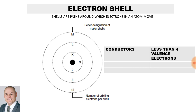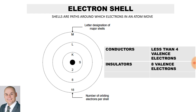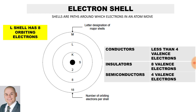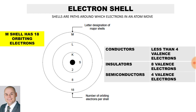If we look at the electron shells of an atom, we find that the shells are the paths around which electrons in an atom move. Conductors consist of less than four valence electrons, insulators have eight valence electrons, and semiconductors have four valence electrons. The K shell has two orbiting electrons, the L shell has eight orbiting electrons, and the M shell has 18 orbiting electrons.